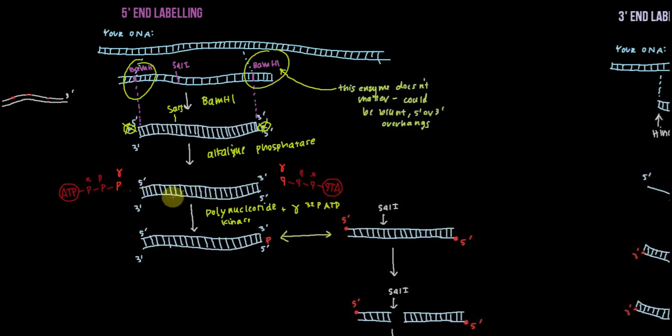And what the polynucleotide kinase will do is add these phosphates here to these 5' ends, producing a product that looks like this, where we have these radioactive phosphates here on both 5' ends. And now we have our labeled 5' ends, but now we have a problem because we have DNA that's labeled at both 5' ends and usually we just want one. And so this is where this other restriction enzyme site, this SalI site, comes in.